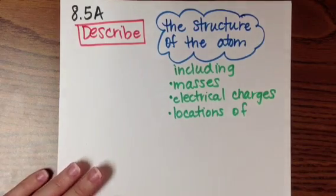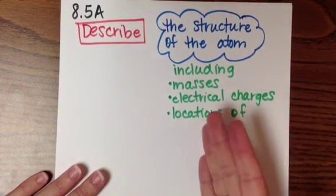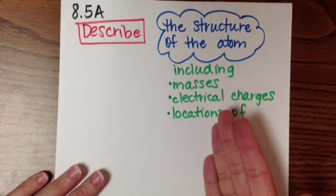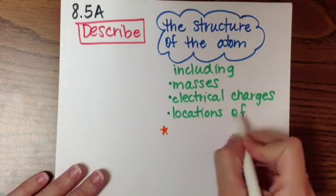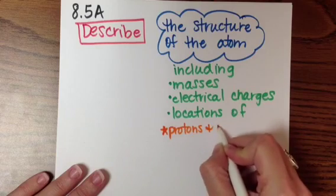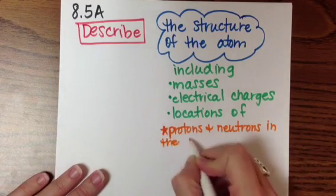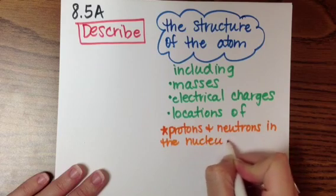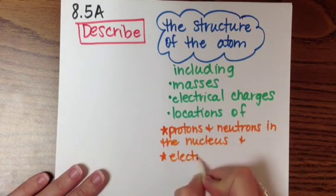Once I get down here, I'm going to change colors. There's no right or wrong way to do this. Just do whatever feels comfortable for you. The locations of the protons and neutrons and the nucleus and the electrons and the electron cloud.